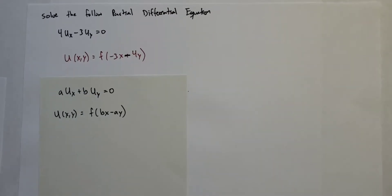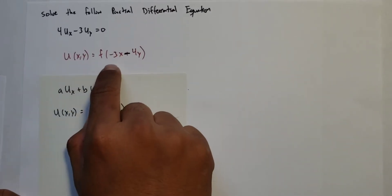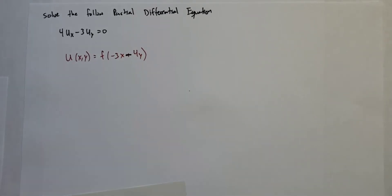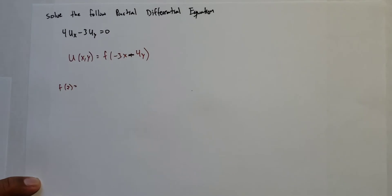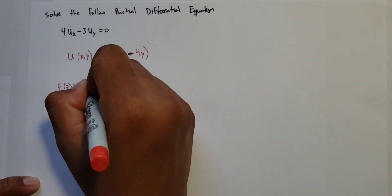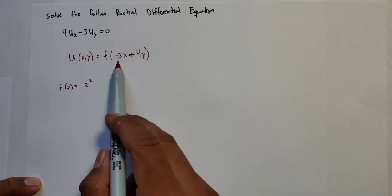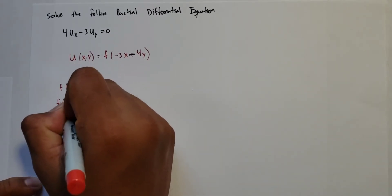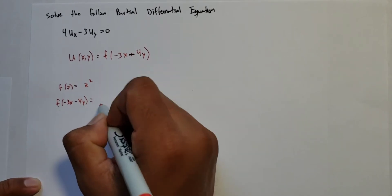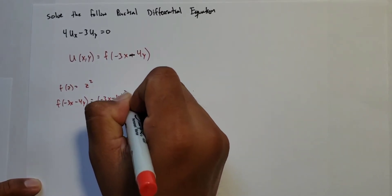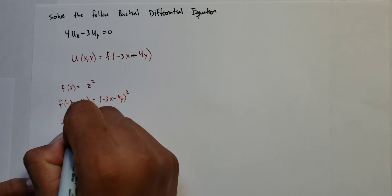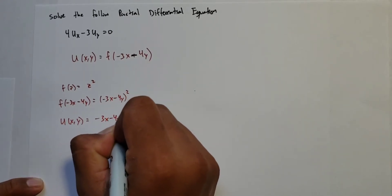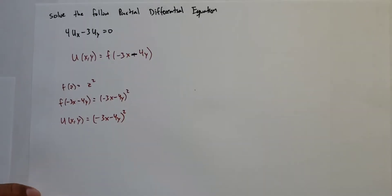This means your equation can be any function evaluated at 3x minus 4y. For example, if we have f(z) = z², and we plug in minus 3x minus 4y, we get f(−3x − 4y) = (−3x − 4y)². By transitivity, u(x, y) = (−3x − 4y)². This is actually a solution to this PDE.